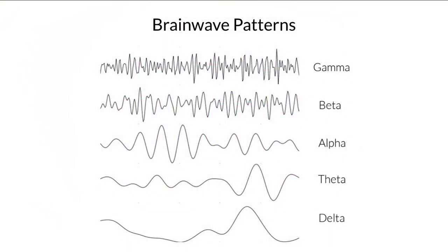As you can see in this chart, within each brainwave pattern there is a range of frequencies. Since you probably don't have an EEG machine sitting around, these brainwaves on this chart won't do you much good, so it's important to learn how to recognize and achieve these states instead. We have five brainwave patterns that can be measured.